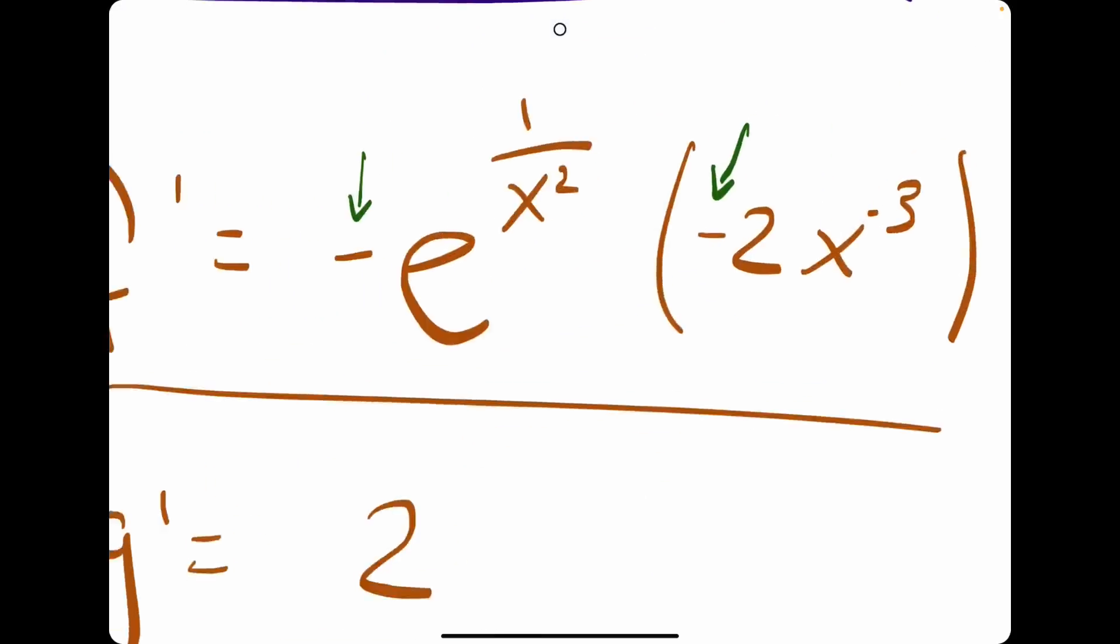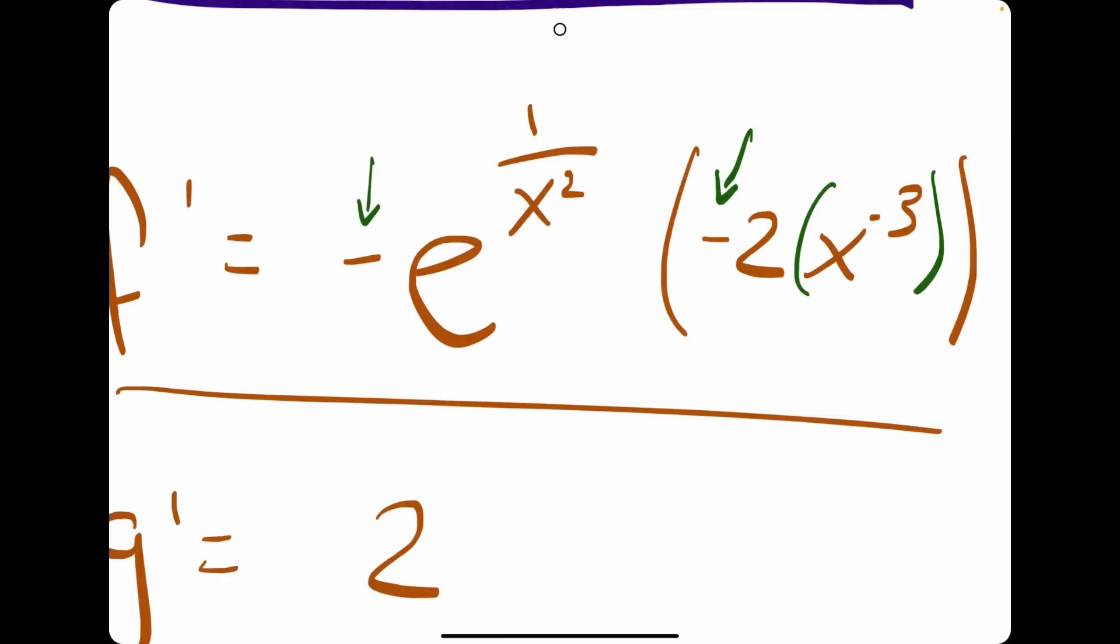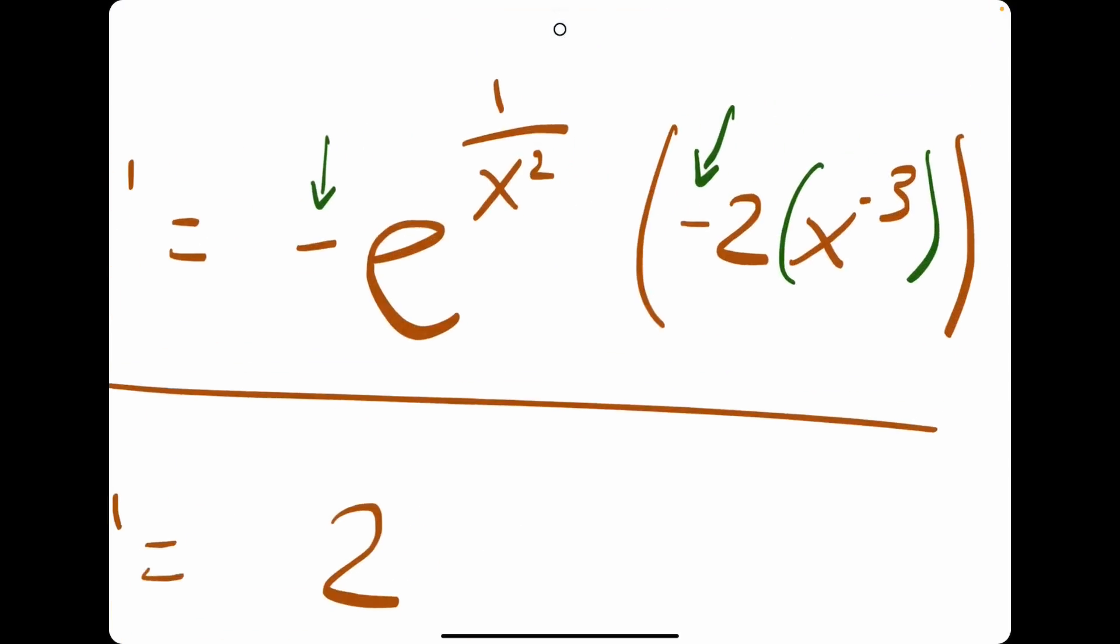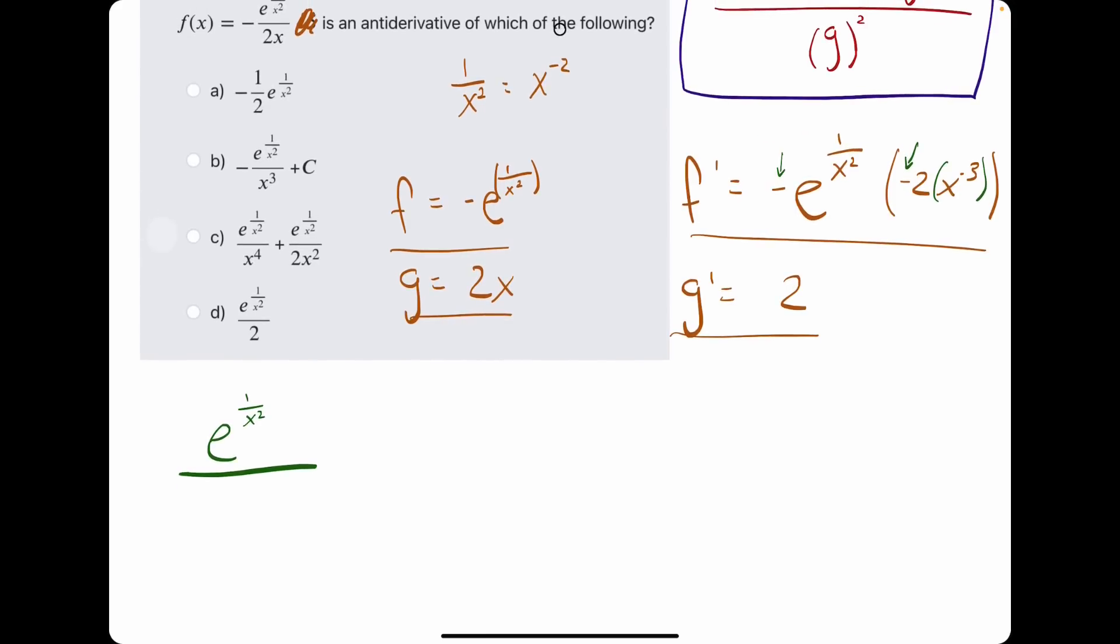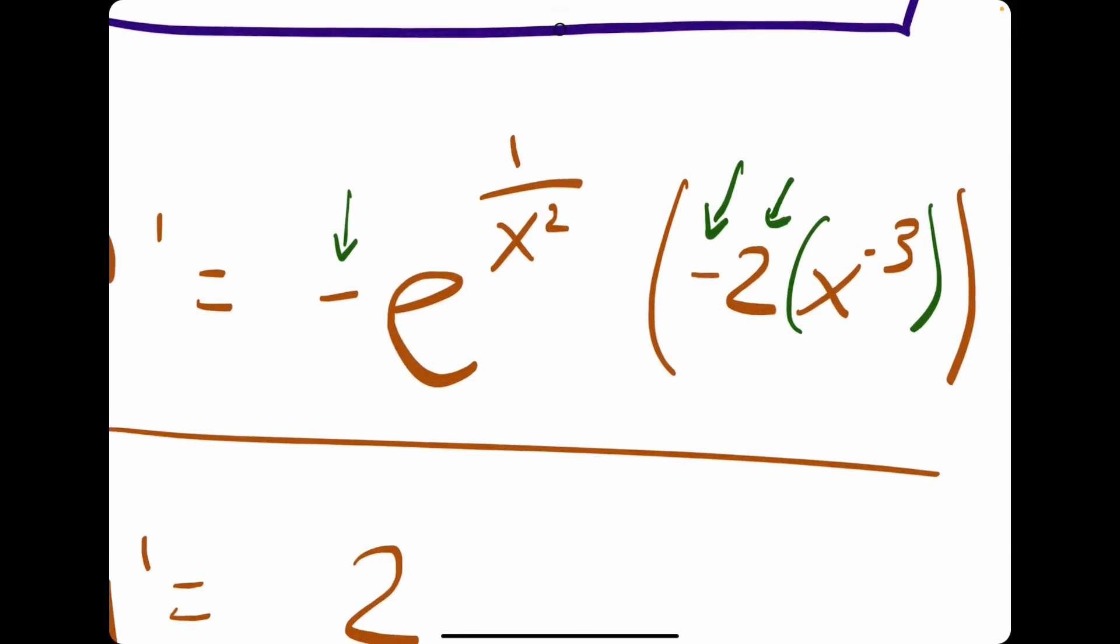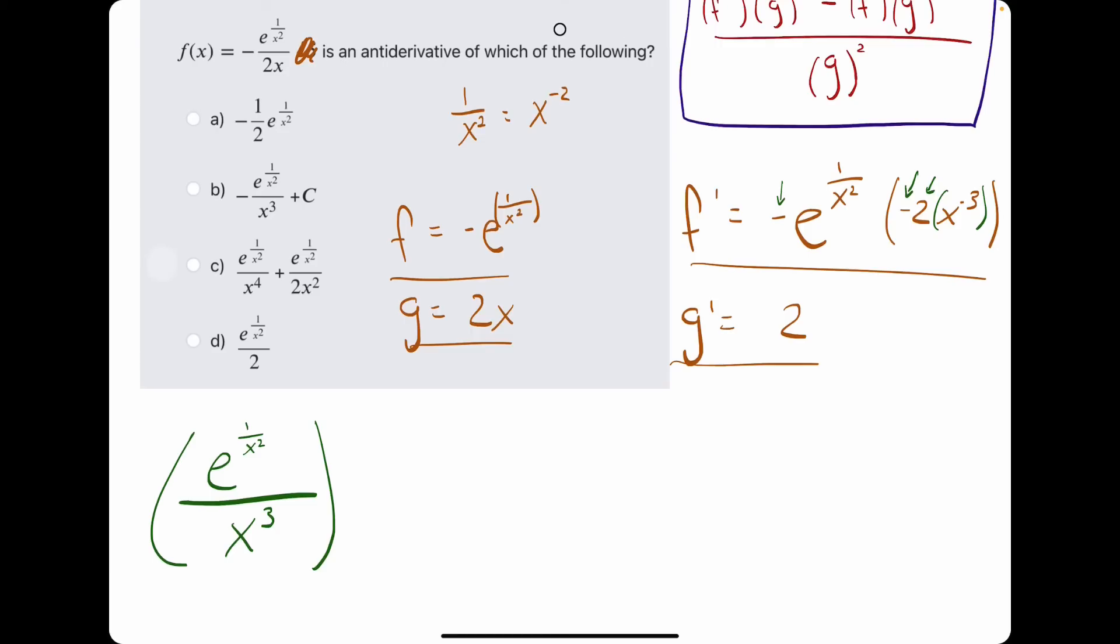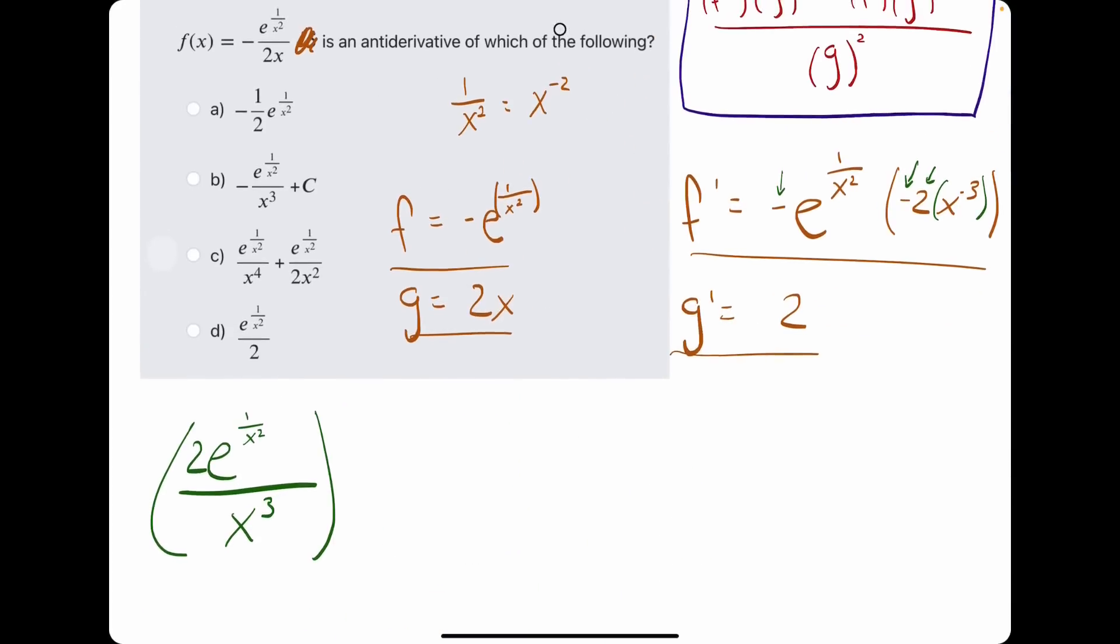And I'll divide it by x cubed, because if we have x to the negative 3 up top, we'll go ahead and throw it in the denominator as a positive exponent. And then I'm almost forgetting there's still a 2 that will stay on top with the e, because the 2 is not being raised to the negative 3. The 2 has no exponent, so it just remains where it was up top, while the x term goes to the bottom.